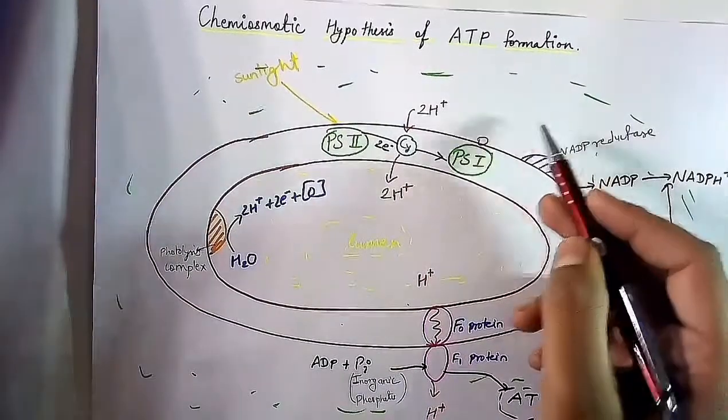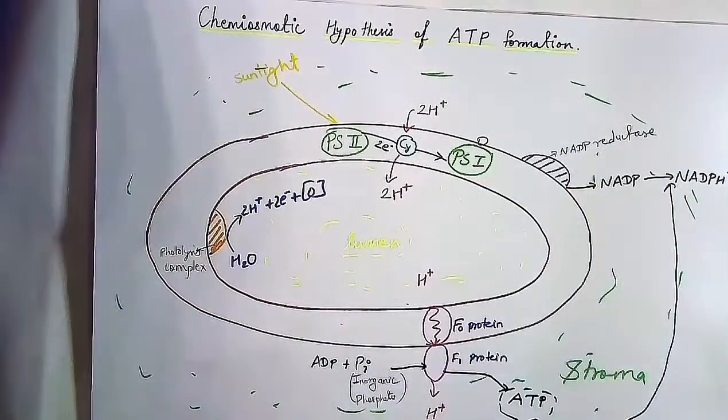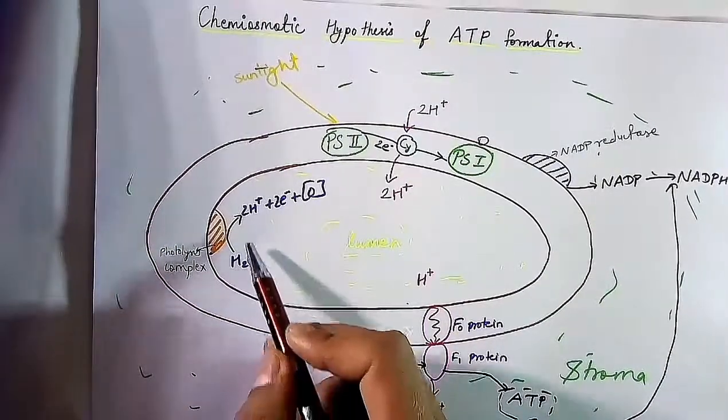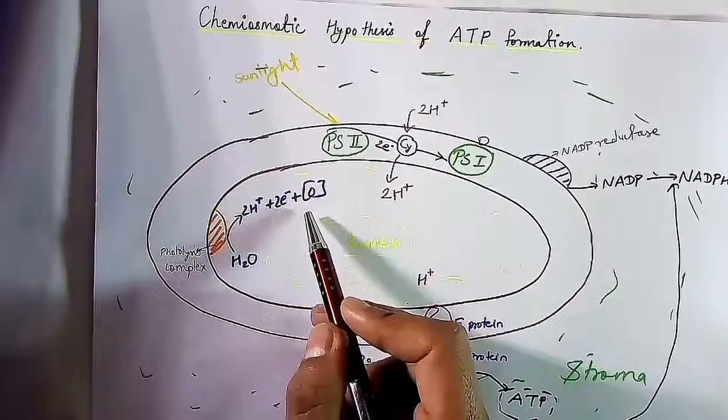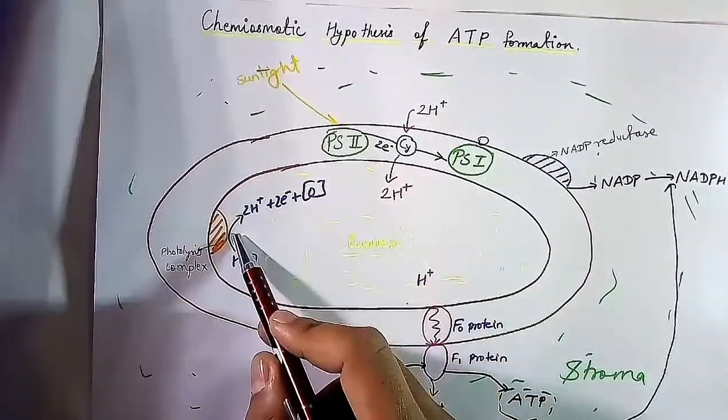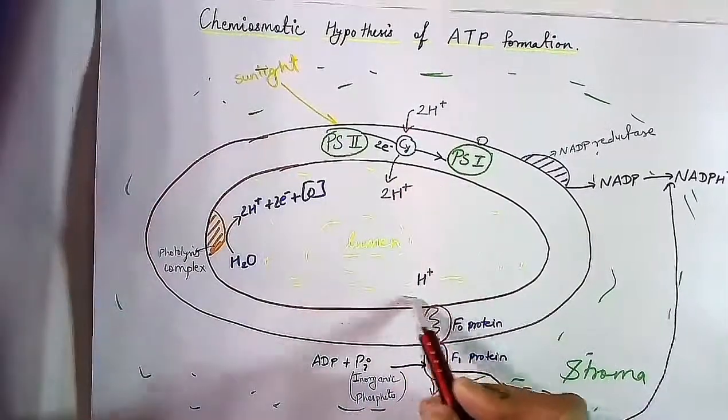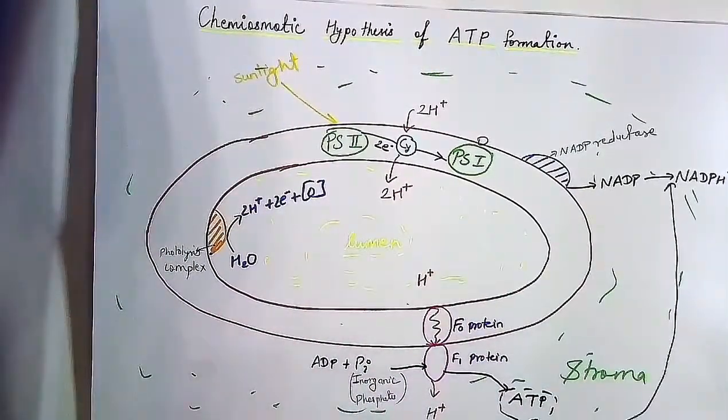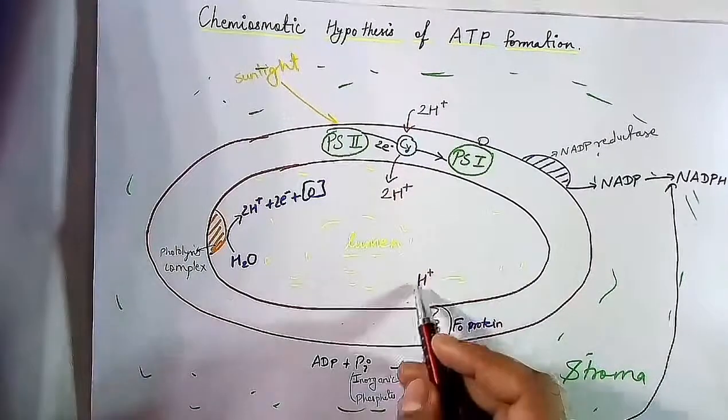And again, this photolysis complex breaks down water molecule into proton, electron, and atom of oxygen. So by these two processes, the concentration of proton is greater in the lumen than that of stroma, so proton tends to diffuse into stroma from lumen.